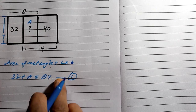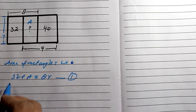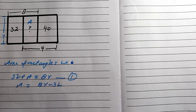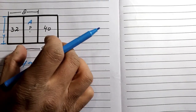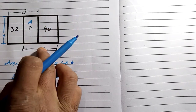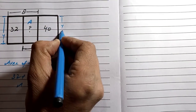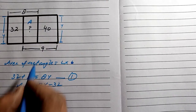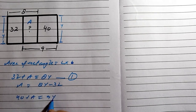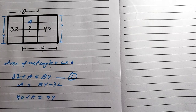We call this equation number one. If we subtract 32 from both sides, we get a equals 8y minus 32. Now looking at these two rectangles on the other side, the area is a plus 40, which equals 9 multiplied by y. So we have: 40 plus a equals 9y. This is equation two.